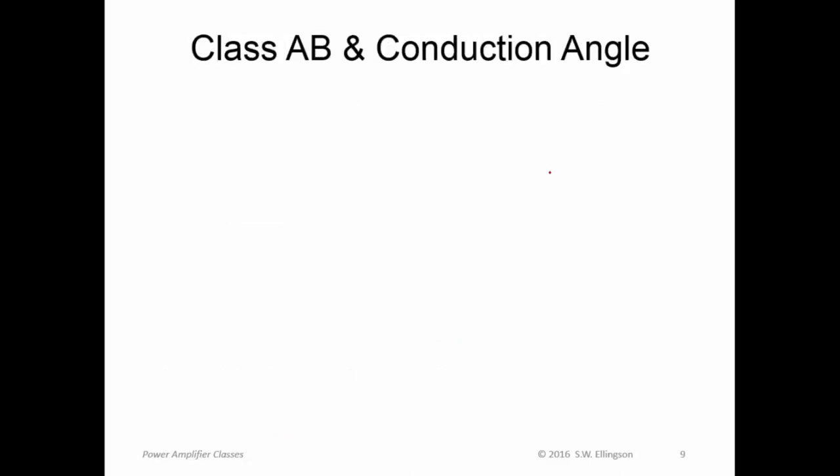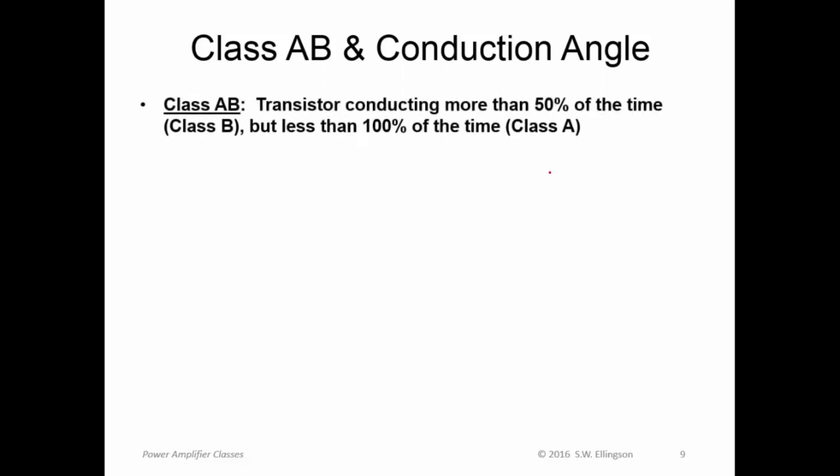So that brings us to the topic of class AB and conduction angle. Class AB is when the transistor conducts more than 50% of the time, which is what we have in class B, but less than 100% of the time, which is what we have in class A. So the intermediate case is the input waveform being arranged such that we don't necessarily go all the way to class B, but we're certainly not in class A operation either. It's a compromise. That brings us to the idea of conduction angle.